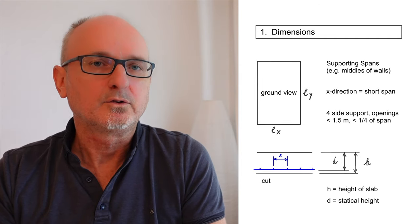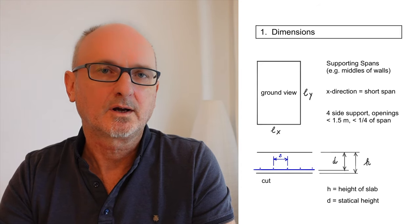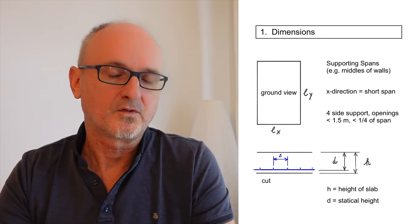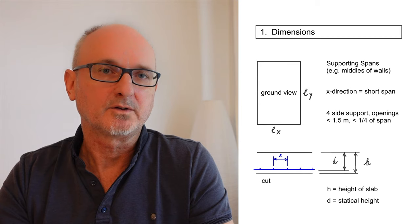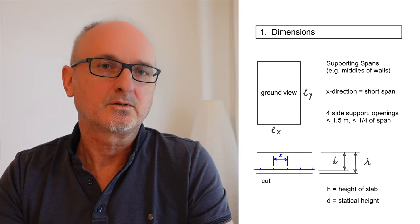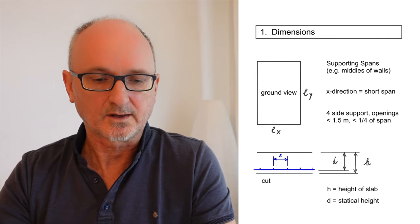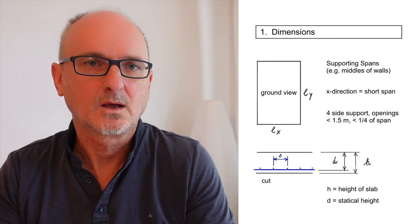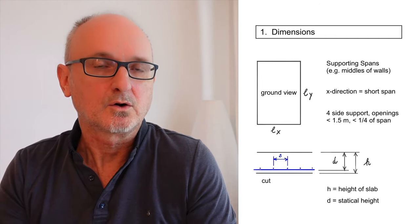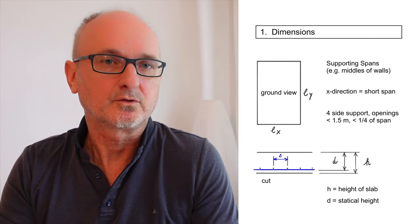Having the height of the slab, you subtract the concrete cover and theoretically half the diameter of the bar — so subtract a couple of millimeters for the bar diameter. Then you get the statical height, called d. I will put the concrete example numbers in red letters in the script so you can follow properly.